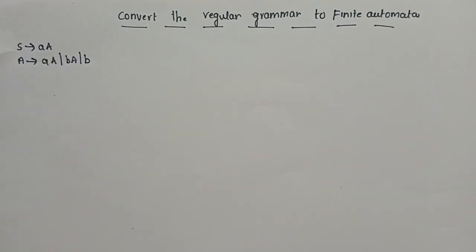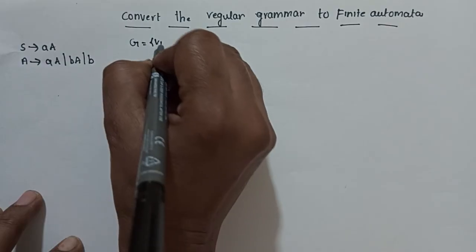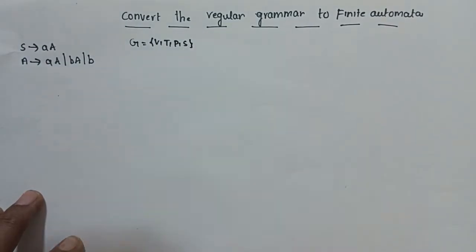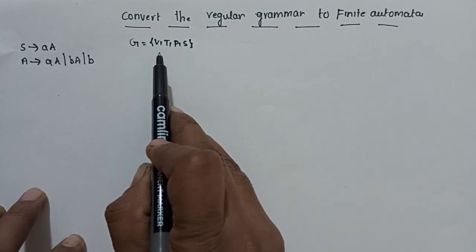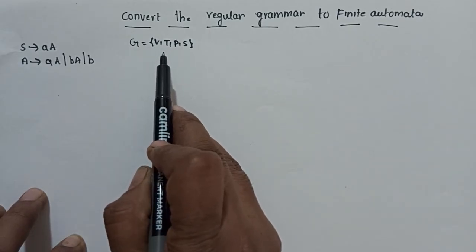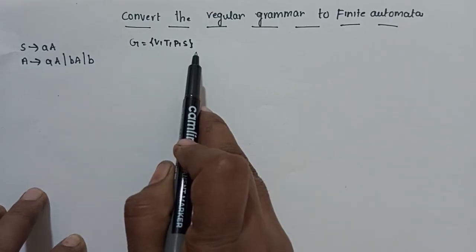In our previous videos, we have already discussed regular grammar and finite automata. Now, regular grammar is a 4-tuple: V, T, P, S. V is the set of variables or non-terminals, T is the set of terminals, P is the set of production rules, and S is the start symbol.